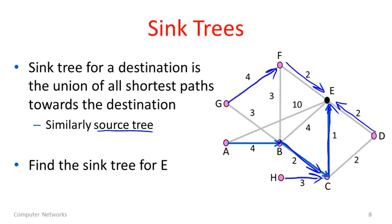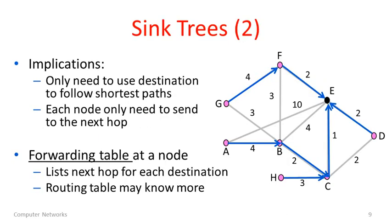So this is a sink tree for E. And since we broke a tie, there could be more than one. Let's just clear that up. So there are some very nice implications of sink trees. If, because of this shortest path property, given that we have these shortest paths, all we need to follow them towards a destination is the destination. The source that they came from is irrelevant.